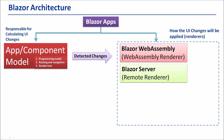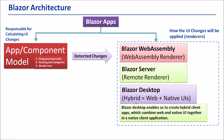The app component model is the engine room of the Blazor application. It includes programming model, routing and navigation, and Razor components. The app component model with these functionalities will detect changes, and the detected UI changes will be sent to the renderer. At present there are two kinds of renderers: Blazor WebAssembly and Blazor Server. In the near future there will be Blazor Desktop, which enables us to create hybrid client apps combining web and native UI together in a native client application.